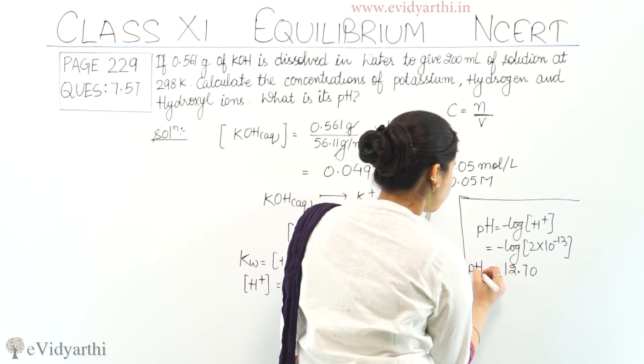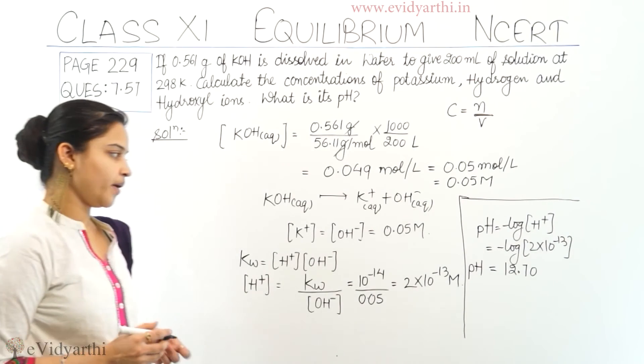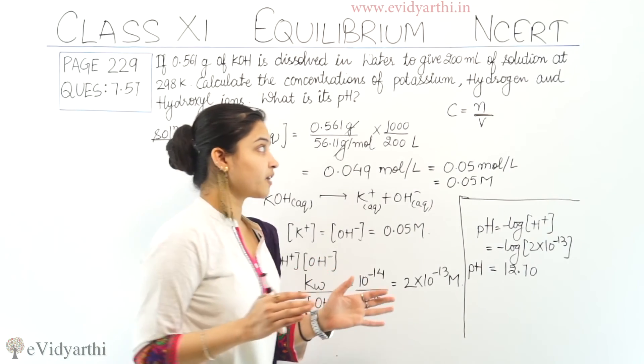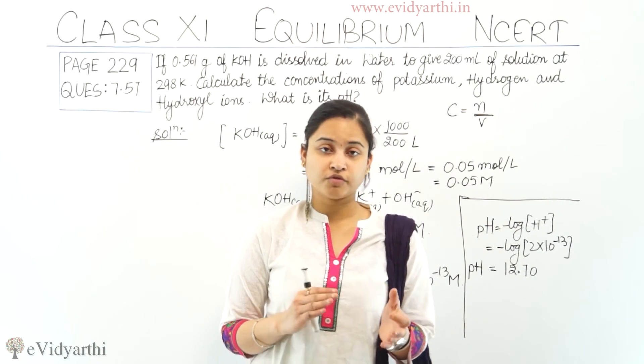pH of the solution is equals to 12.70. This was all about this question. I have calculated out the concentration from for three of the ions. Potassium, hydroxyl and hydrogen.